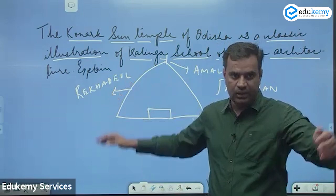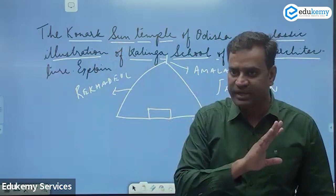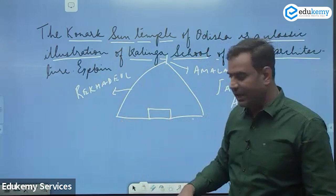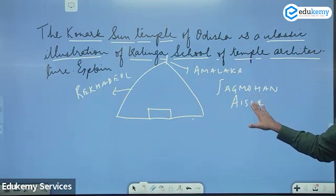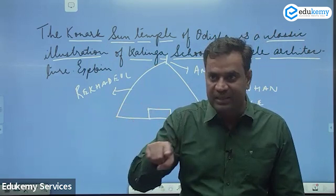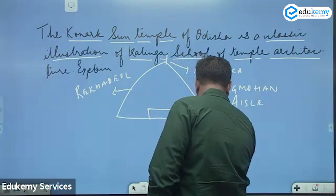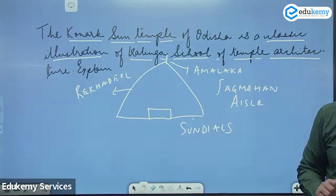The rekha deval of the Sun Temple at Konark has been destroyed — there is a debate whether it was destroyed by humans or damaged by natural factors. However, the mandap is present and is very large; it is known as Jagmohan or Chagmohan, along with the aisle. Another distinctive feature of this temple is that it is built on a large platform marked by large wheels in the form of chariots. These chariot wheels function as sundials, with spokes enabling calculation of accurate timing.